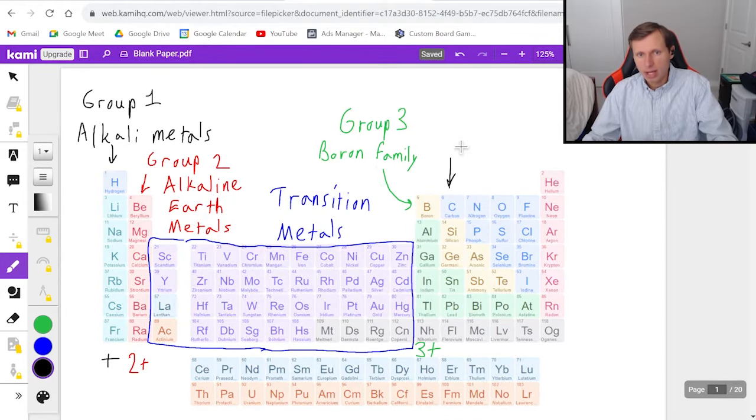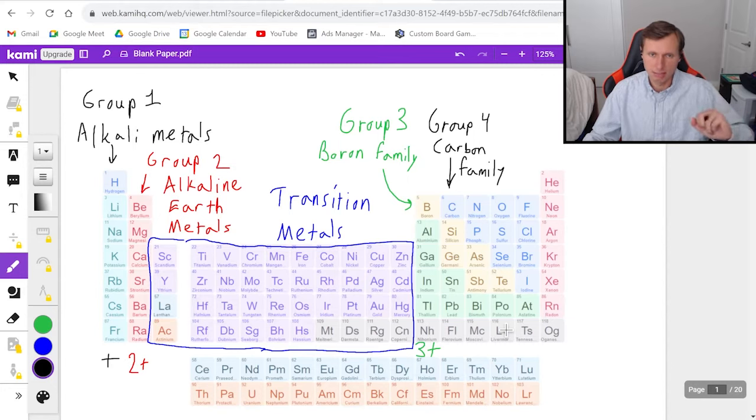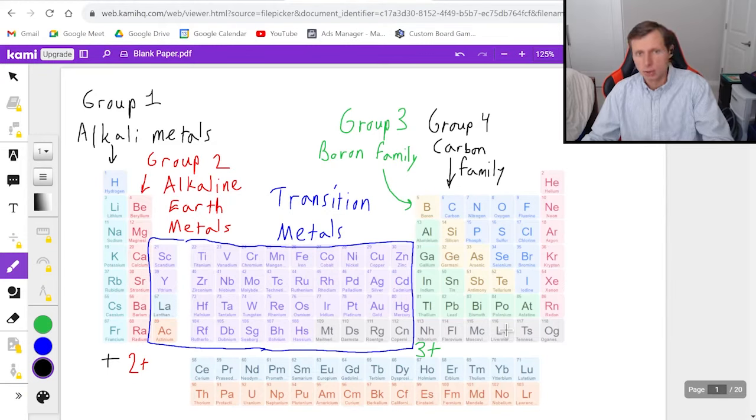To the right of that, we have carbon. We'll call it group four or the carbon family. These guys are interesting because since they have four valence electrons, which again, I'm not explaining today, but basically what it means is that they can either be plus four or minus four. Their valence electrons can go both ways. So there's no standard that you're going to see for ionic compounds.